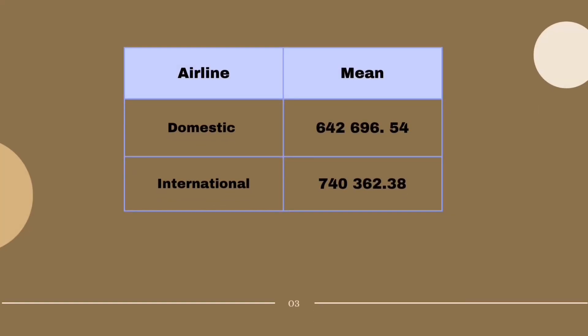After the calculation has been done, the domestic airline shows a mean of 642,696.54, while the international shows 740,362.38.